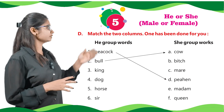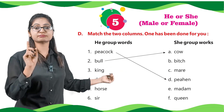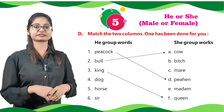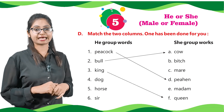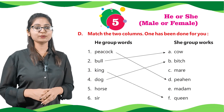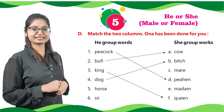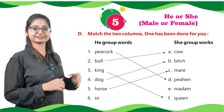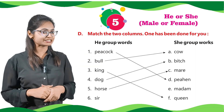Next, on number three we have given king, and we can see queen in the other group — that's number F — so we will match king to F, queen. Number four, we have dog, and in the she group we have bitch at position B, so we will match dog to bitch. On number five, we have horse, and at C we can see mare, so we will match horse to mare. Last but not the least, we have sir — we match it to madam.